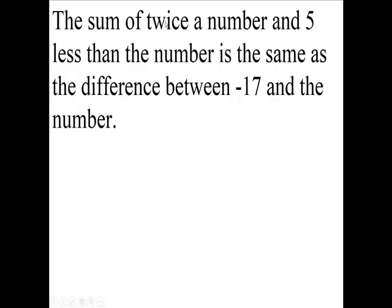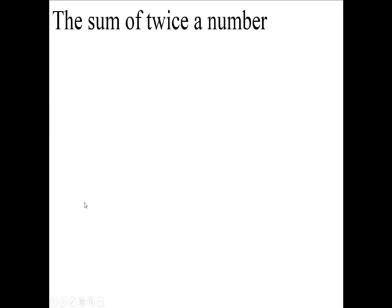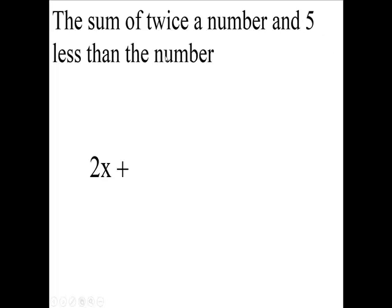Look at the first part of this. Twice the number would be 2x, 2 times x. The sum of twice the number and—we've got to add something here because we have a sum—5 less than the number. So start off with the number, 5 less than that.